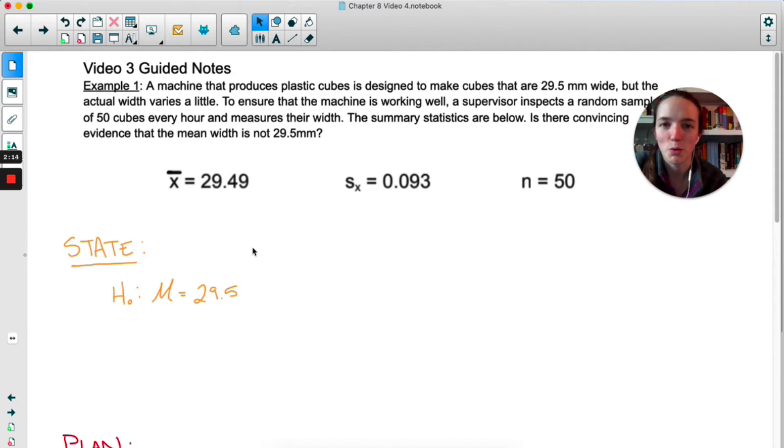Either way, the game won't work. If the cubes are too big, they won't fit into the holder, and if they're too small, they won't hold each other up. So it's kind of important that they are the right size. So our alternate is just not equal to, mu not equal to 29.5.